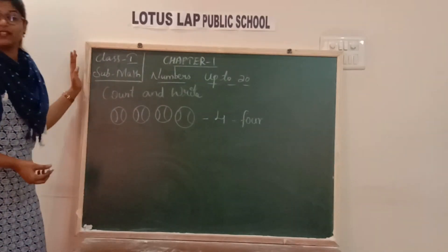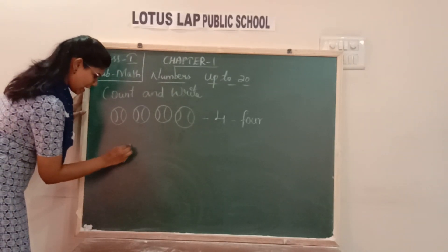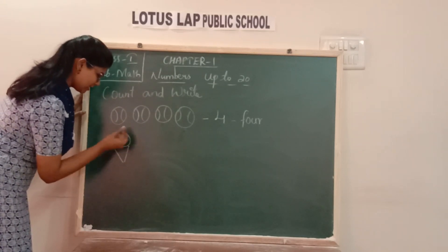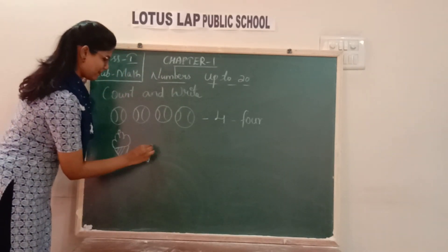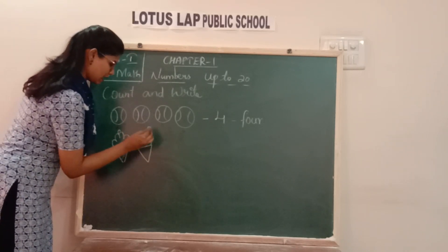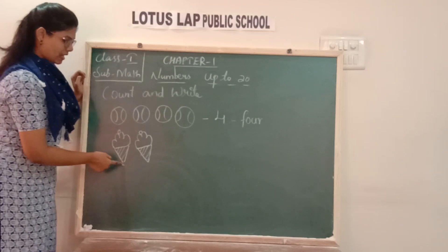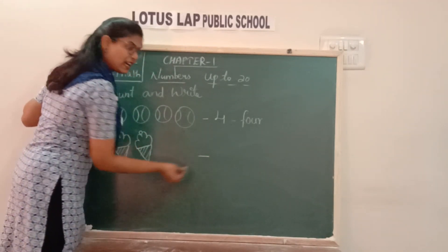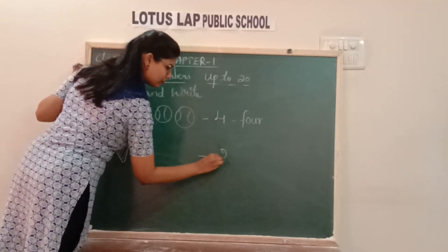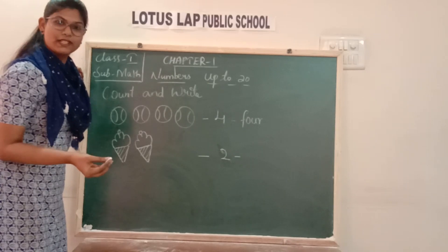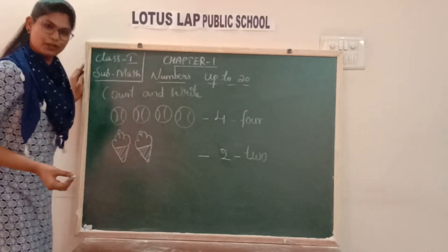Which picture shall we draw? Shall we draw ice cream? Yes. I hope you all enjoy ice cream. Here is an ice cream — a corn ice cream. So total how many ice creams do I have here? 1, 2. How many ice creams? 2 ice creams. I will write the number 2. What is the spelling of 2? T-W-O, 2. Very good.